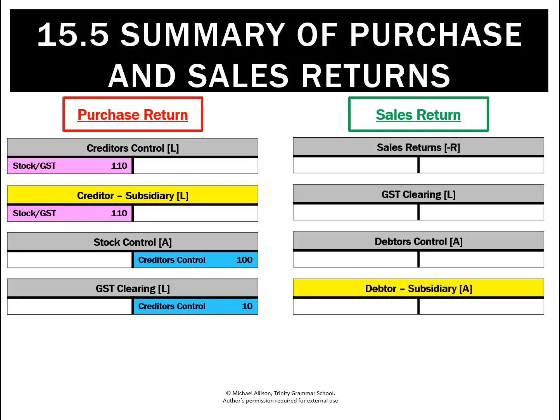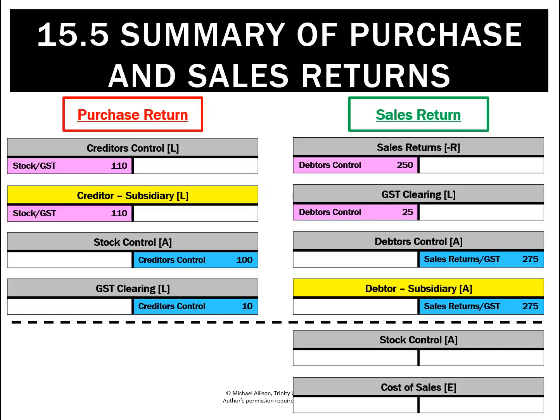The sales return had six entries. The first four were to do with the sale amount: a debit to sales return, a debit to GST clearing, offset by a credit to debtors control and a credit to the subsidiary account. Then we had to undo the cost of sale, giving us six entries in total — a debit to stock and a credit to cost of sales.